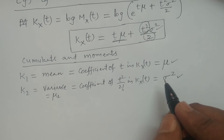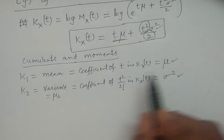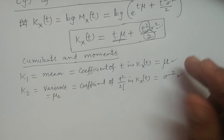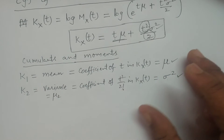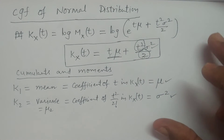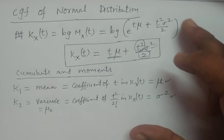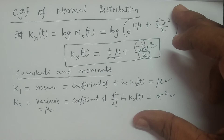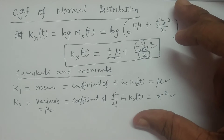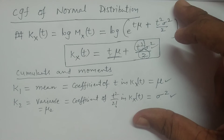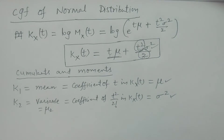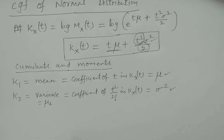So we have found out the mean and variance of the normal distribution. In an examination, if you are asked to find the mean and variance of the normal distribution, you calculate these steps — the cumulant generating function, then mean and variance up to here. It is very simple.